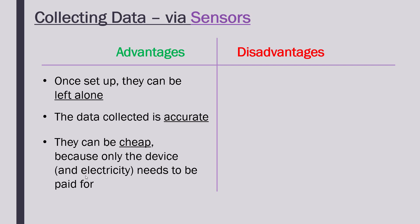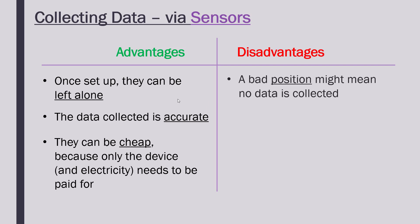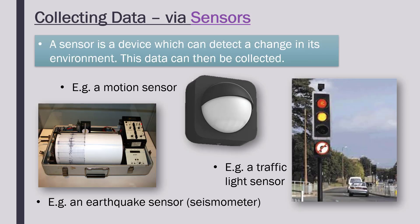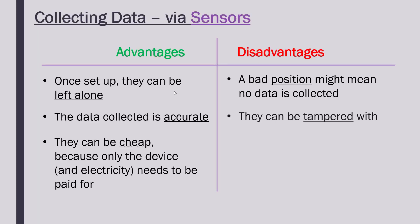Once you buy the sensor, you don't have to do much else apart from pay for electricity, which won't be significant since they are very simple devices not using a lot of power. In terms of what's not so good: if a sensor is in a bad position, no data may be collected. For example, if a tree branch grows in front of a traffic light sensor, it won't detect motion — and because you've left it alone, you might not realize.